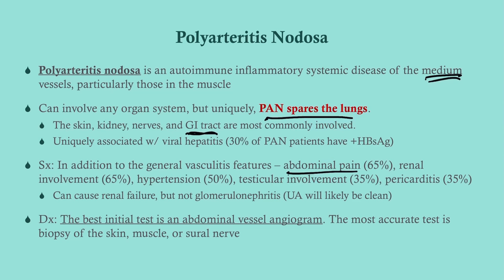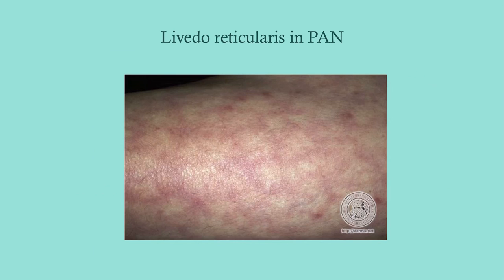Other features of PAN include renal involvement, hypertension, testicular involvement, and pericarditis. Importantly, because it affects medium vessels — not the tiny glomerular vessels — PAN does not cause glomerulonephritis. Renal insufficiency can occur, but the urinalysis will be clean. The best initial test is an abdominal vessel angiogram, targeting the medium-sized vessels of the gut. The most accurate test is biopsy.